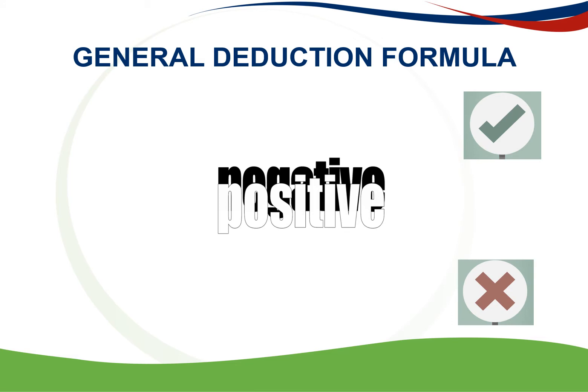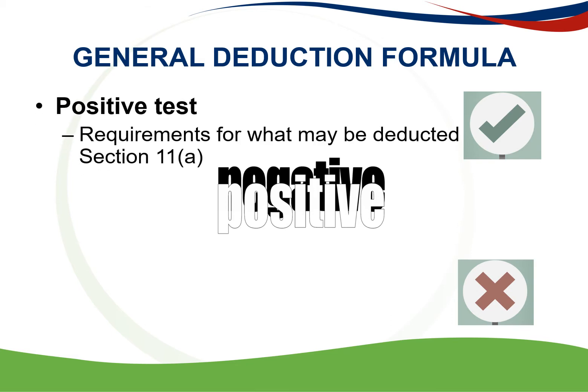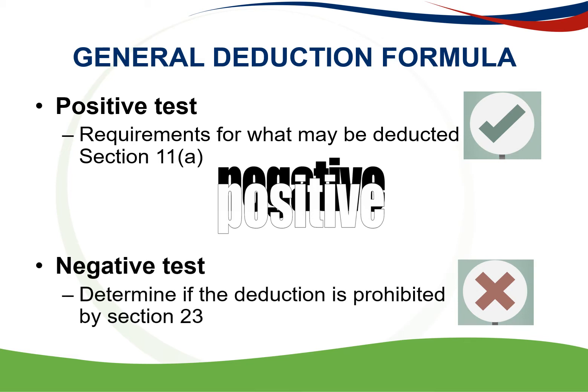Deductions of a general nature need to fulfill the requirements set out in Section 11A read with Section 23. This is referred to as your general deduction formula. The first requirement is your positive test, set out in Section 11A — the requirements for what may be deducted. Then Section 23 stipulates what may not be deducted, and this will be your negative test.